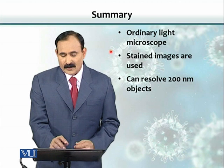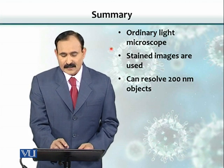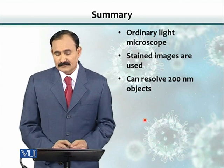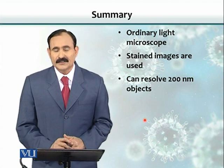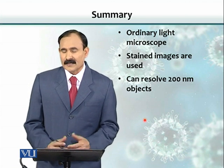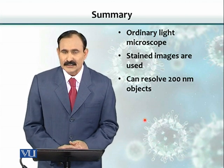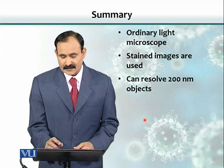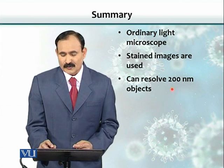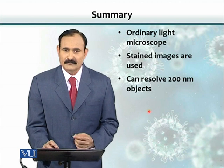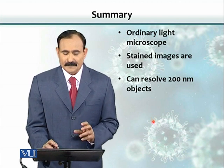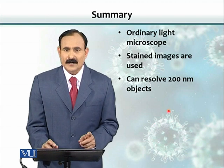In summary, an ordinary light microscope uses light as a source of illumination. In order to increase contrast, we use stained objects — this is done mostly with light microscopy. The resolution of a light microscope is only 200 nanometers, meaning that if organisms are 200 nanometers apart, we can visualize them with the light microscope.